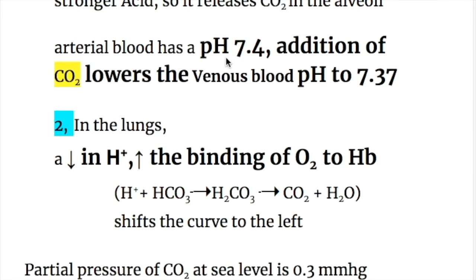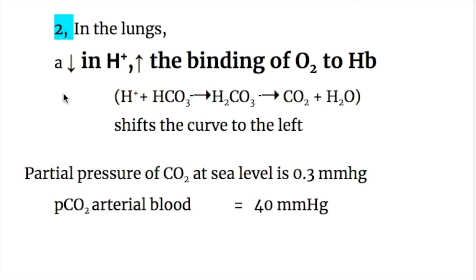Arterial blood has a pH of 7.4. Addition of carbon dioxide lowers the venous blood pH to 7.37. Number two, in the lungs, a decrease in the hydrogen ion increases the binding of oxygen to hemoglobin. Hydrogen combines with bicarbonate to form carbonic acid, which is a weak acid, and breaks into carbon dioxide and water. Carbon dioxide is then expelled out of the body.